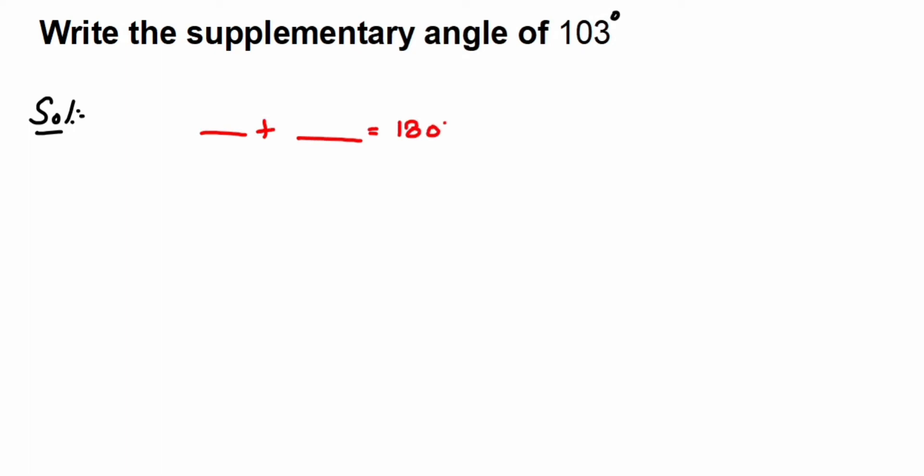These two angles are called supplementary angles. Here one of the angles is given, which is 103 degrees. We have to find out the supplementary of it, means how much more we have to add to this 103 to get 180.